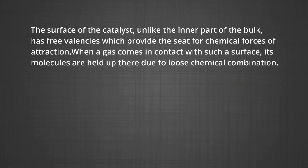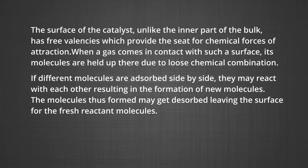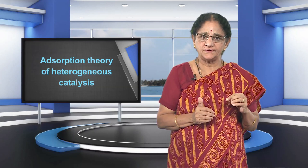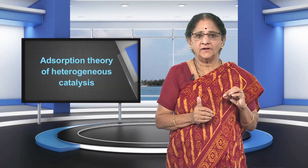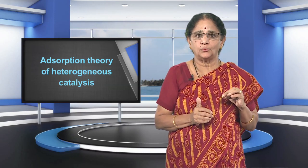The surface of the catalyst, unlike the inner part of the bulk, has free valences which provide the seat for chemical forces of attraction. When a gas comes in contact with such a surface, its molecules are held up there due to loose chemical combination. If different molecules are adsorbed side by side, they may react with each other, resulting in the formation of new molecules. The molecules thus formed may get desorbed, leaving the surface for fresh reactant molecules. This theory explains why the catalyst remains unchanged in mass and chemical composition at the end of the reaction, and is effective even in small quantities.